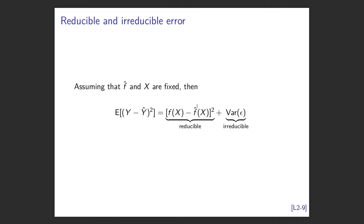Is it any good? We can look at the expected squared distance between the true value of y and the estimated value. Assuming f-hat and x are fixed, this breaks down into: the difference between what you guessed and the truth - the reducible error - plus the irreducible error. By choosing your model you may reduce the first part, but there'll always be noise in the system. Your model can only get so good. We'll look at a bigger form - the bias-variance decomposition - and you'll get to prove it because it's an assignment question.